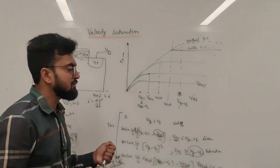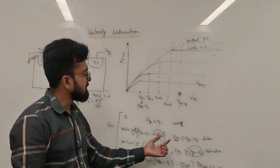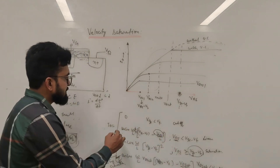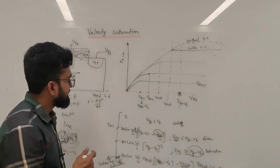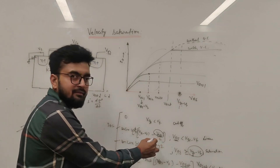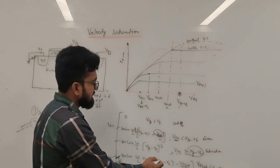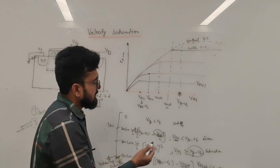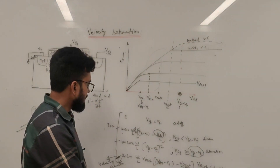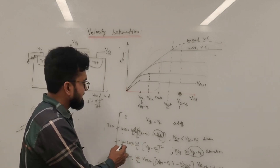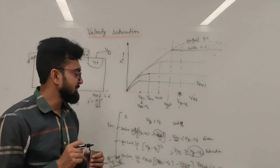We now have three drain current equations for different regions of operation: linear, saturation, and velocity saturation. The linear and saturation equations are familiar. To get a current equation that accounts for velocity saturation, we replace VDS with VDSat in the saturation equation, giving the velocity saturation current. Here VDSat is less than VGS minus VT.